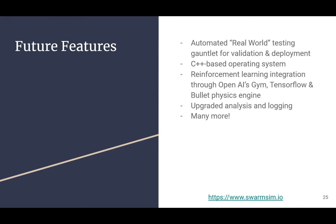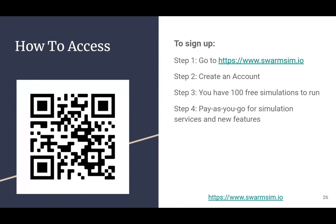In the future, we're working on automated real-world testing gauntlets to help with the sim-to-real gap, pushing systems as hard as possible in sim. We're developing C++-based operating systems with ROS integration, and focusing on reinforcement learning support with OpenAI Gym integration — so you only write the algorithm you need and deploy it. To sign up, go to SwarmSim.io, create an account, and get 100 free simulations. Right now, it's all free since we're in the testing phase. Please provide feedback at the poster.